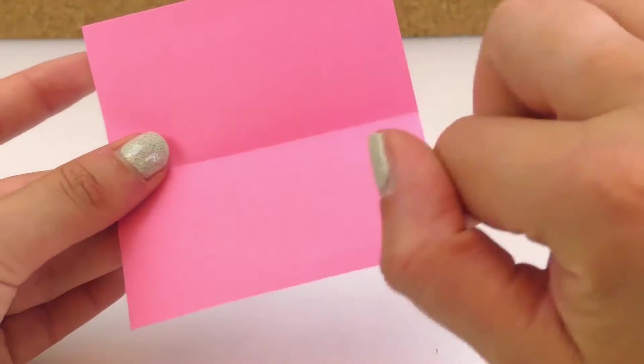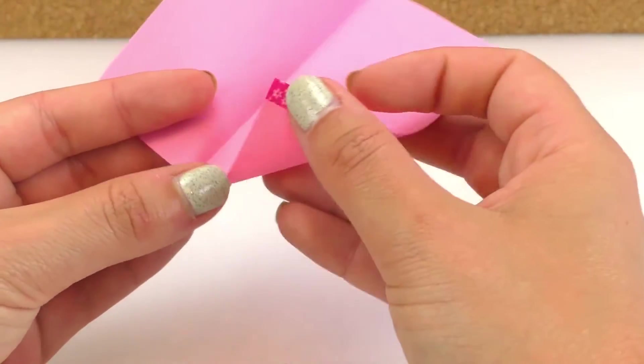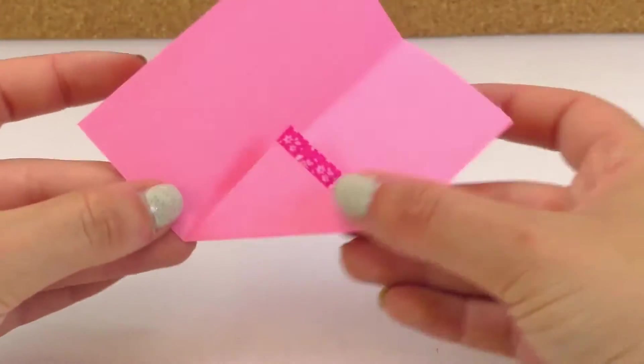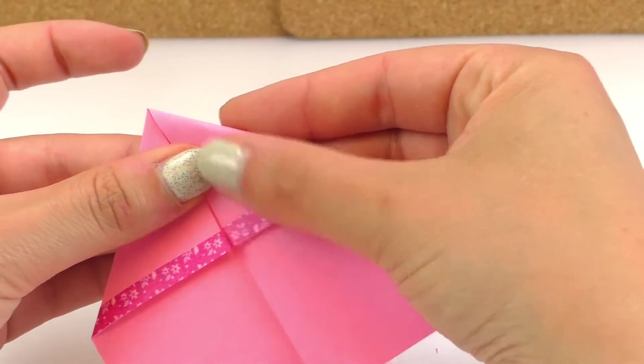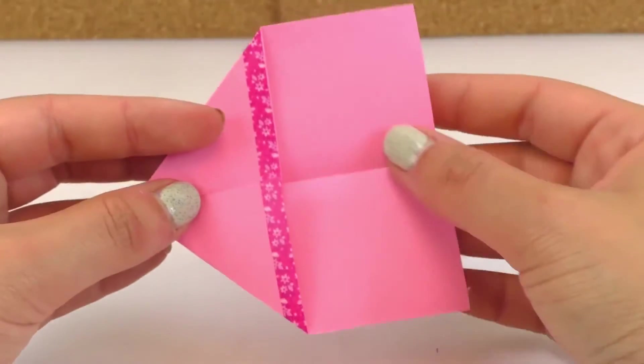Then we're going to open the paper and bring this tip all the way to the middle. It's going to create a triangle. We're going to do the same with the other side. There we go.